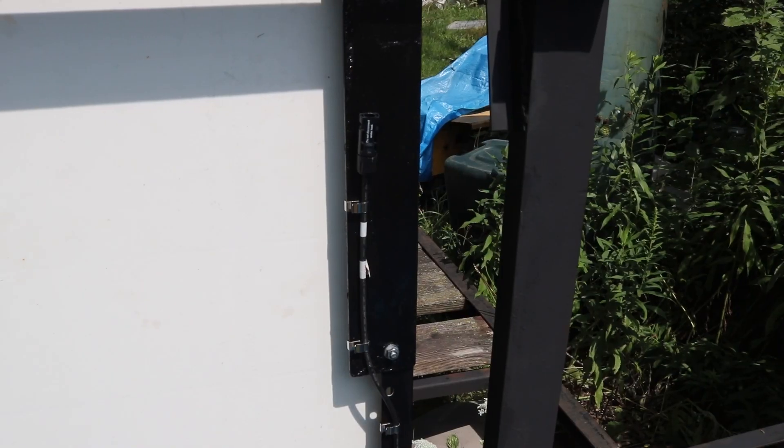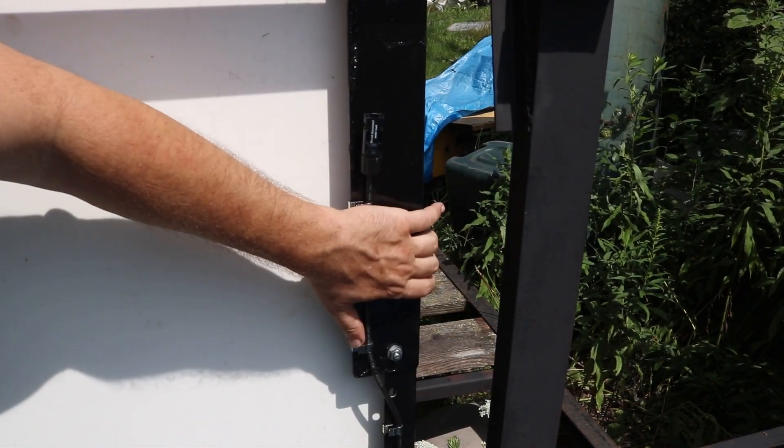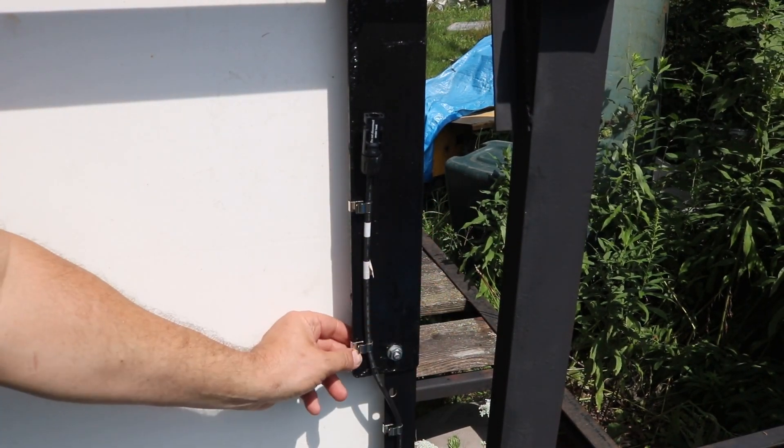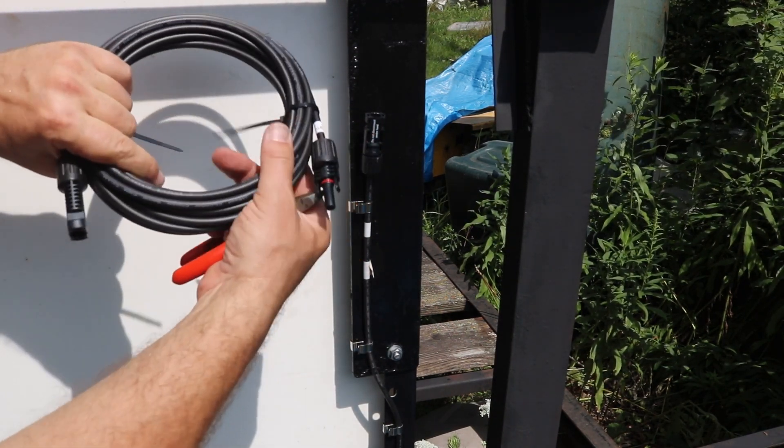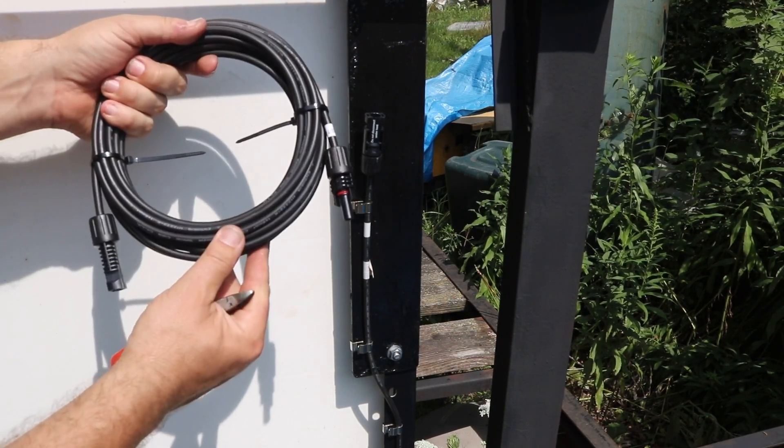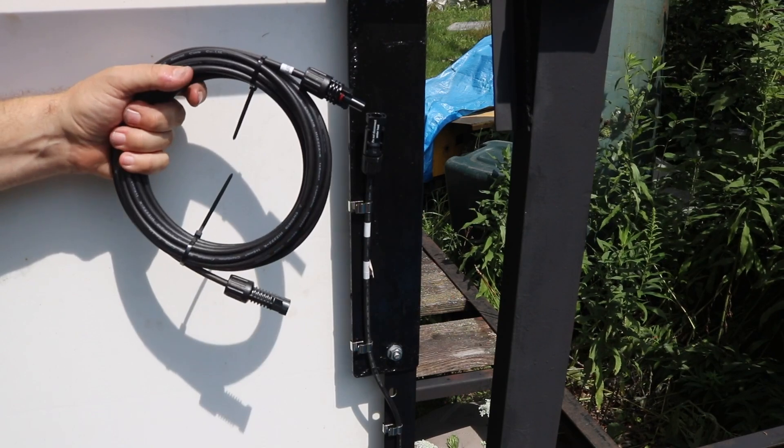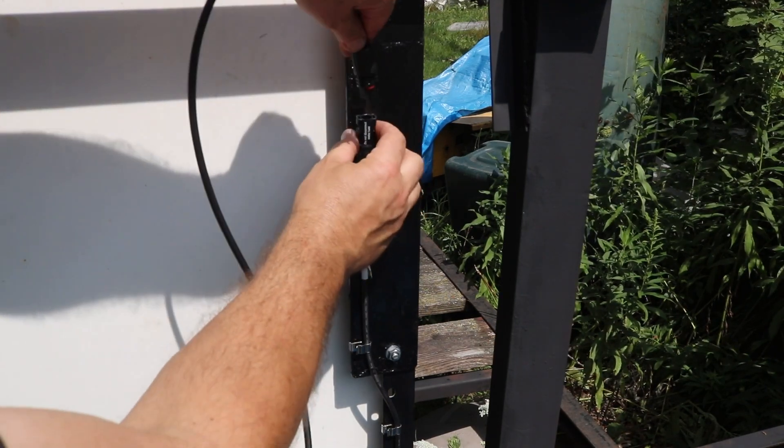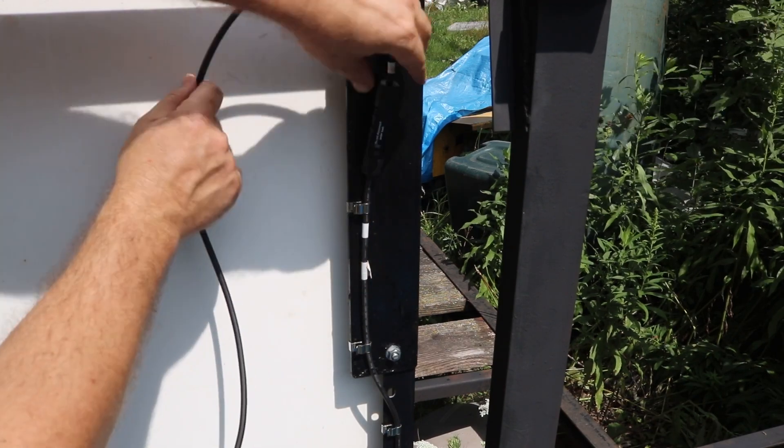Over on this end I've got my negative cable coming up the side of the frame. I've got it held in place with some of those stainless steel clips. Here's my end connection and I'll take my kind of home run cable from here all the way to the front of the trailer. I'll plug that in there.